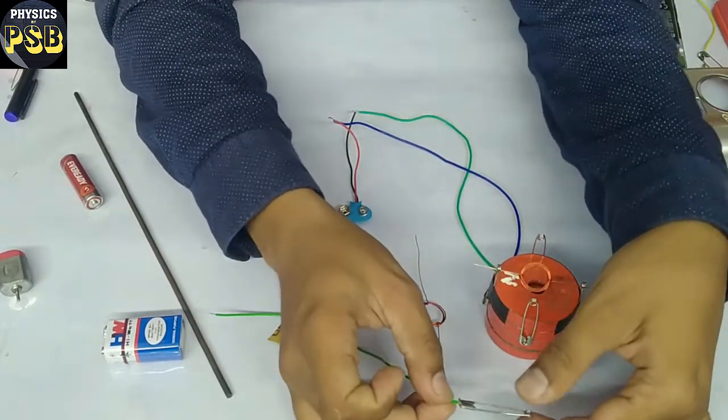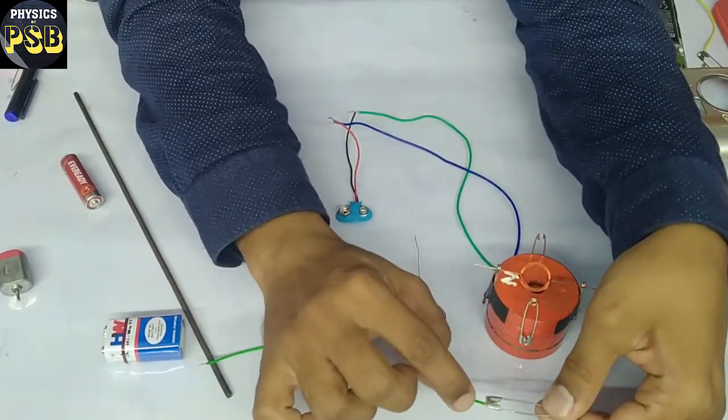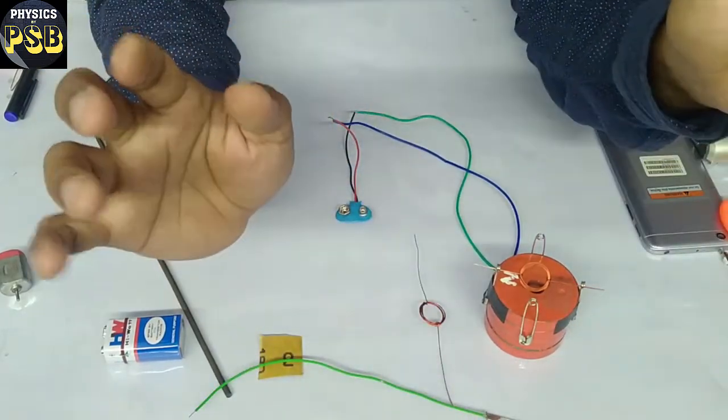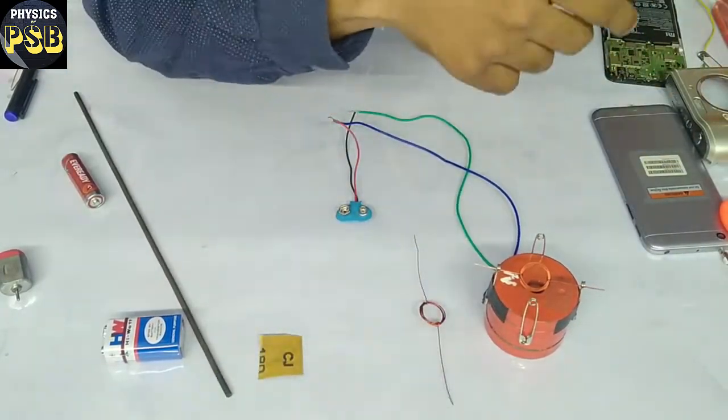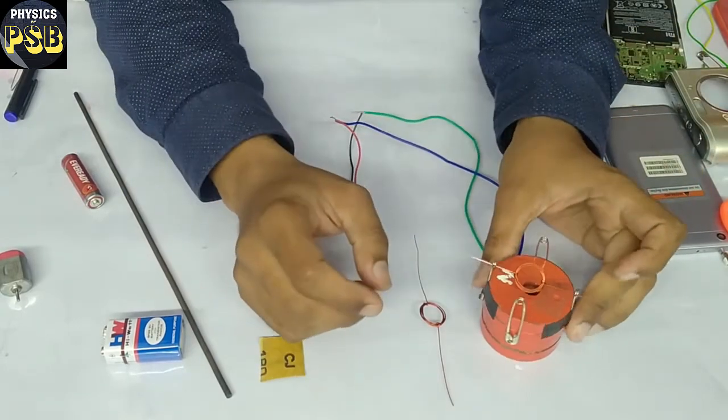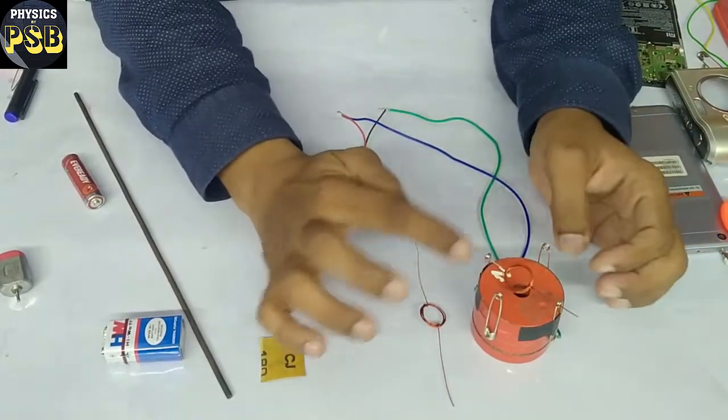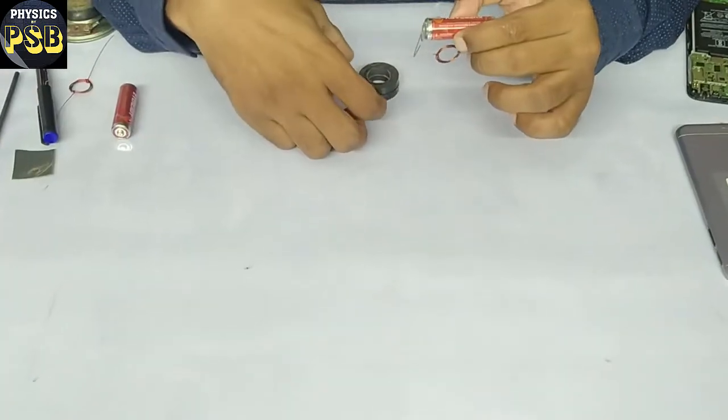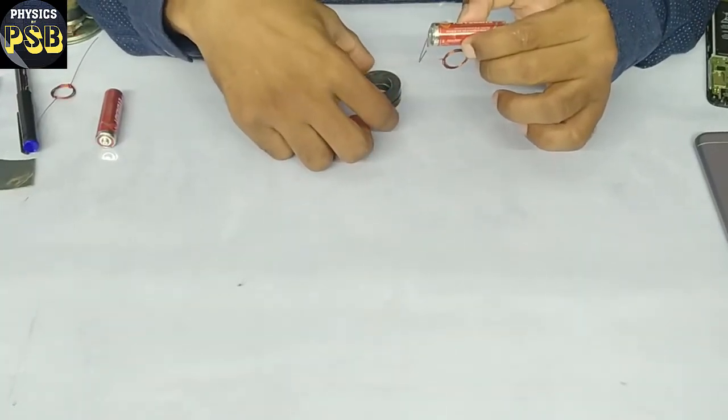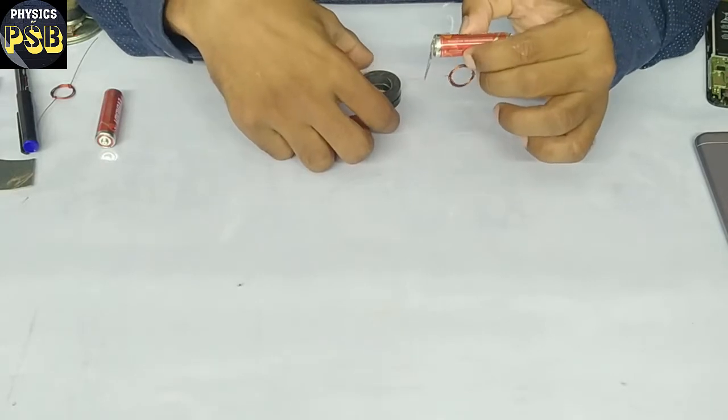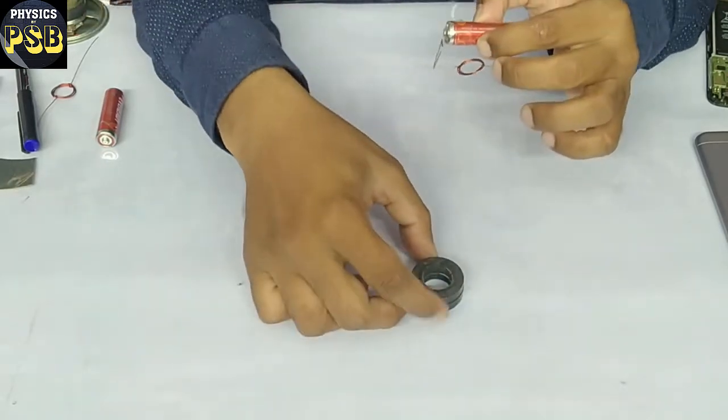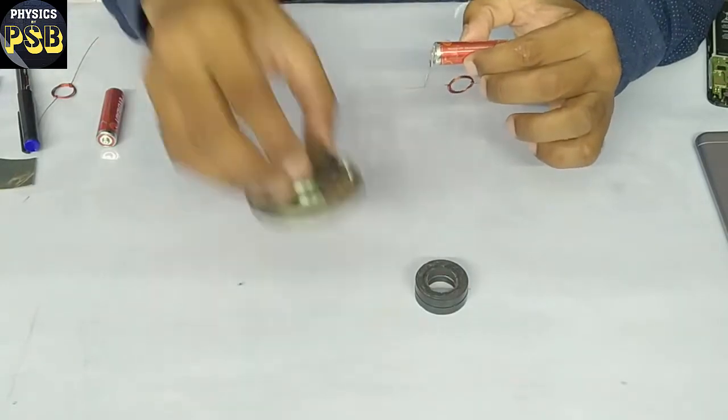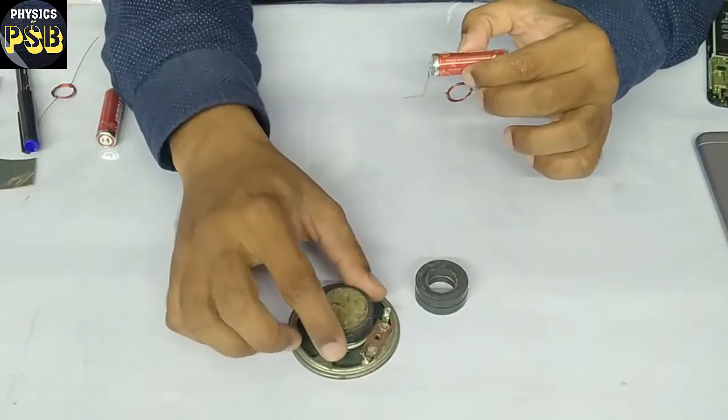Here for better contact I have soldered them, otherwise you can also crimp them directly. I hope you have understood how I have made this simple DC motor. I will show you one more motor which is simpler than the first one. Here I have two magnets removed from a loudspeaker.